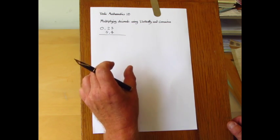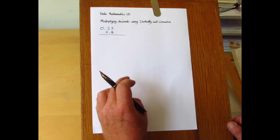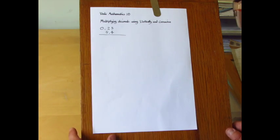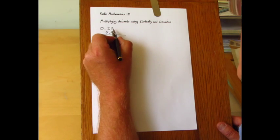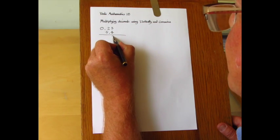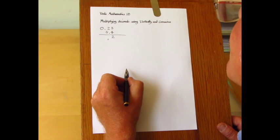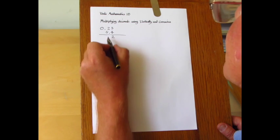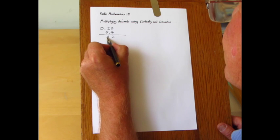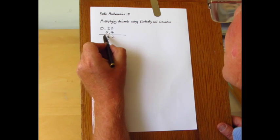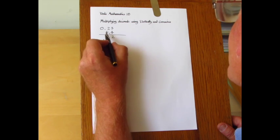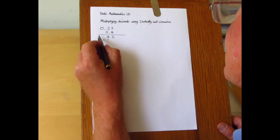So we're going to treat this as 23 multiplied by 54 and then sort out the decimal points later. So three fours are 12, and we have 8 add 15 makes 23, and the 1 makes 24. Then that's 4 with 2 to carry, and then the last step, 2 times 5 is 10, add the 2 is 12.